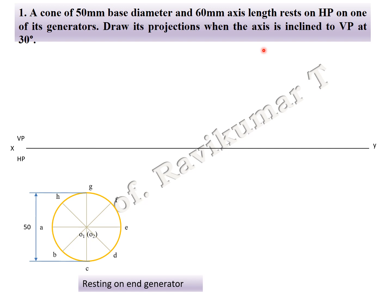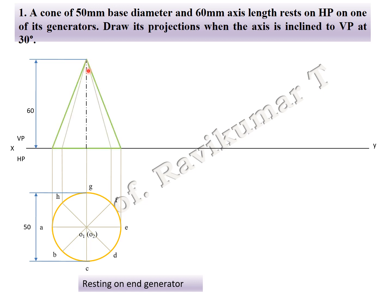Next, extend the projection line upward, take the axis which is 60 mm, then join. These end edges are called generators — these two are called generators. Complete the naming.